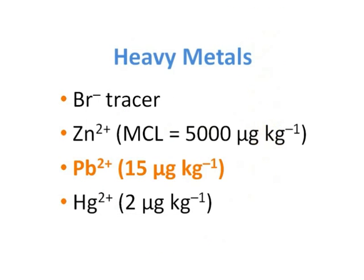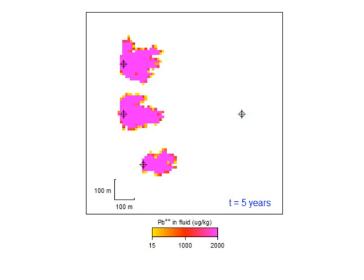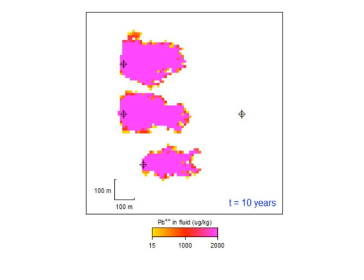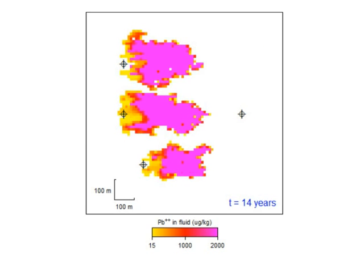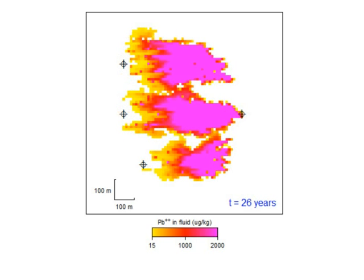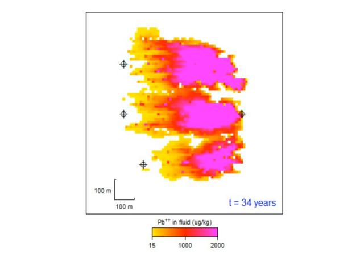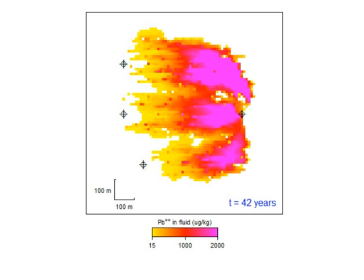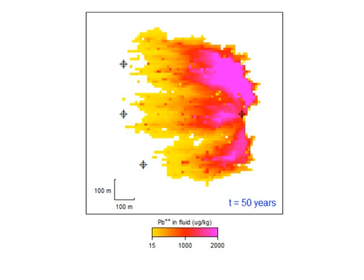Lead sorbs more strongly than zinc, but not as strongly as mercury, which we'll soon see. Its mobility is retarded somewhat, but very little ends up leaving the domain through the remediation well. The majority of the aquifer, as a result, is highly contaminated at the end of the simulation.